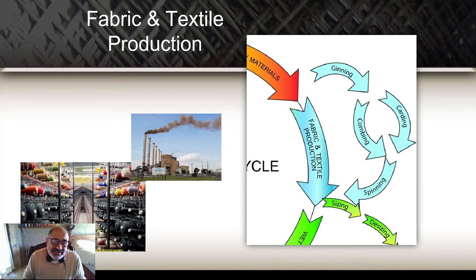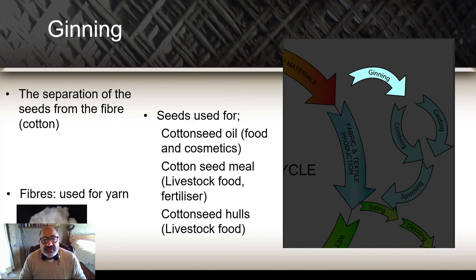Starting with ginning — as you can see, it's a separation of the seed from the fibre. You've got to remove all of the unwanted material before you can start spinning it. We take the fibres and then use them to create the yarn.